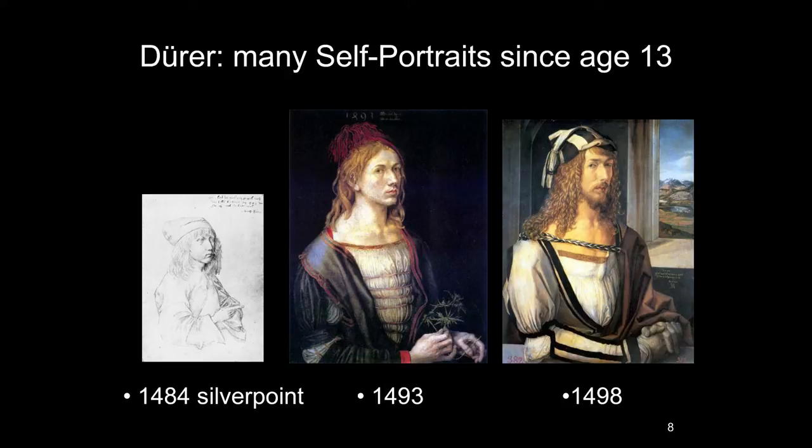Where did Dürer learn to do this at such a young age? His father was a goldsmith and goldsmiths had to do lots of drawings, so his earliest drawing lessons may have been with his father. Even at the very young age of 13 he's producing a remarkable picture. The next year — around age 14 — is when you become an apprentice, so he was already showing skill.